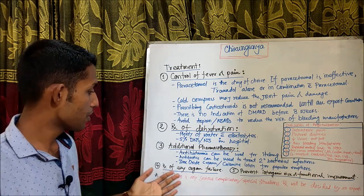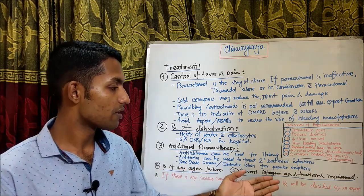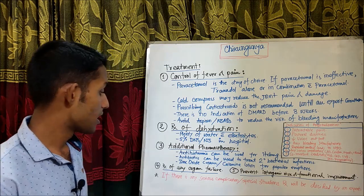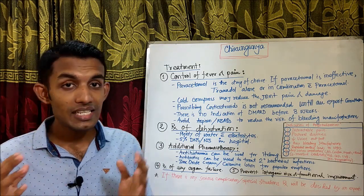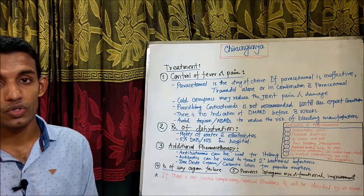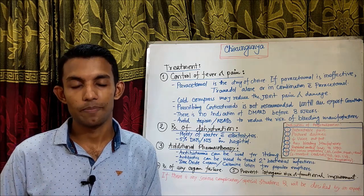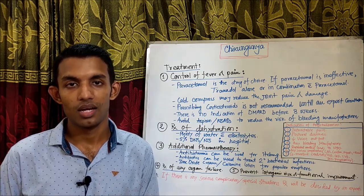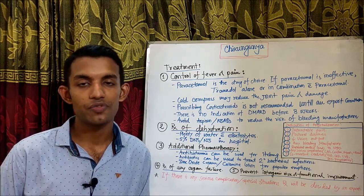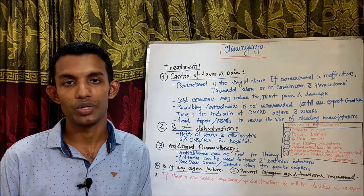Treatment of any organ failure, prevention of iatrogenic risk and functional impairment should be managed. If there are serious complications or special situations, treatment will be decided by an expert. Now, what are the indications for hospitalization of a Chikungunya patient?